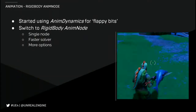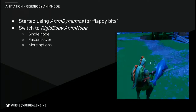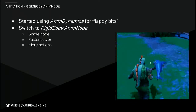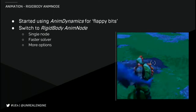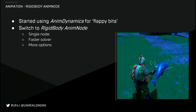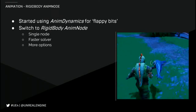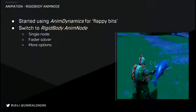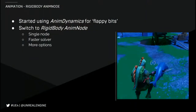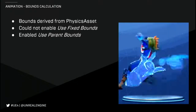For some of the attachments on the character, we're using physics simulation. We started off using the animodynamics node we've had for a couple of years. We switched most of those over to use the rigidbody anim node, which we talked about at GDC last year. It's a single node, it's a faster solver, and it gives you more options including collision settings. One of my favorite cosmetics in the game is a rubber shark on a pole, and that uses this rigidbody node to do simulation as you run around and wave it about.